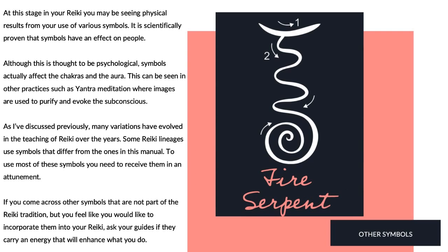Other Symbols. At this stage in your Reiki, you may be seeing physical results from the use of various symbols. It is scientifically proven that symbols have an effect on people. Although this is thought to be psychological, symbols actually affect the chakras and the aura. This can be seen in other practices, such as yantra meditation, where images are used to purify and evoke the subconscious.